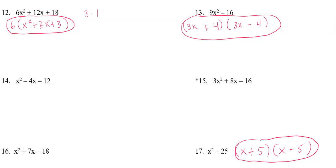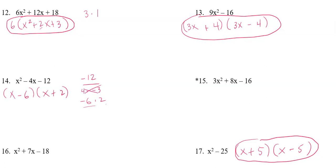Number fourteen — looking for a GCF; I don't see one. So I'll find factors of negative twelve that add to negative four. Four times negative three gives −12, but 4 + (−3) = 1, not −4. What about negative six times two? Yes: −6 × 2 = −12 and −6 + 2 = −4. So the factoring is (x − 6)(x + 2).